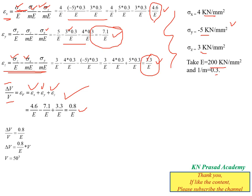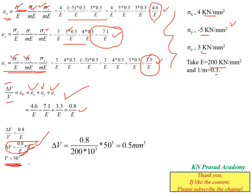Therefore, δV = 0.8 × V / E. The volume of the cube is 50³ mm³. Substituting V = 50³ and E = 200 × 10³ N/mm², we get the change in volume δV = 0.4 mm³. This is the solution for the given problem.